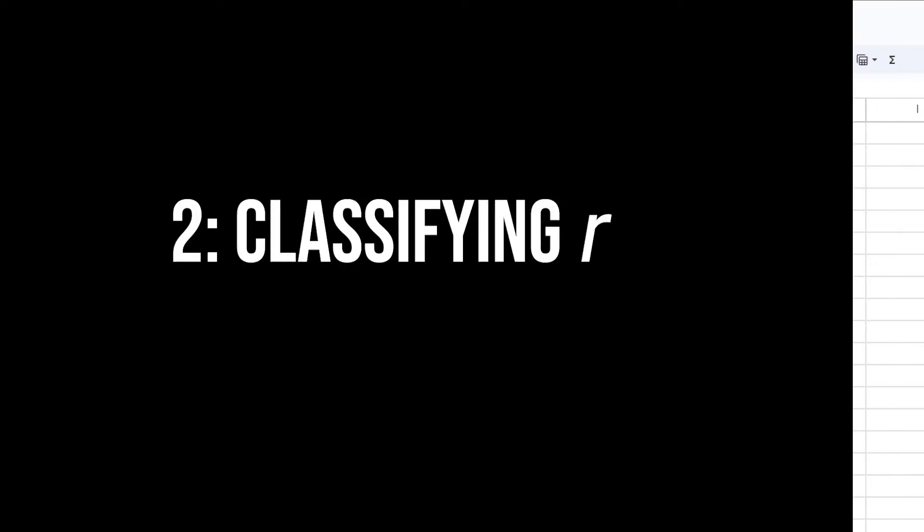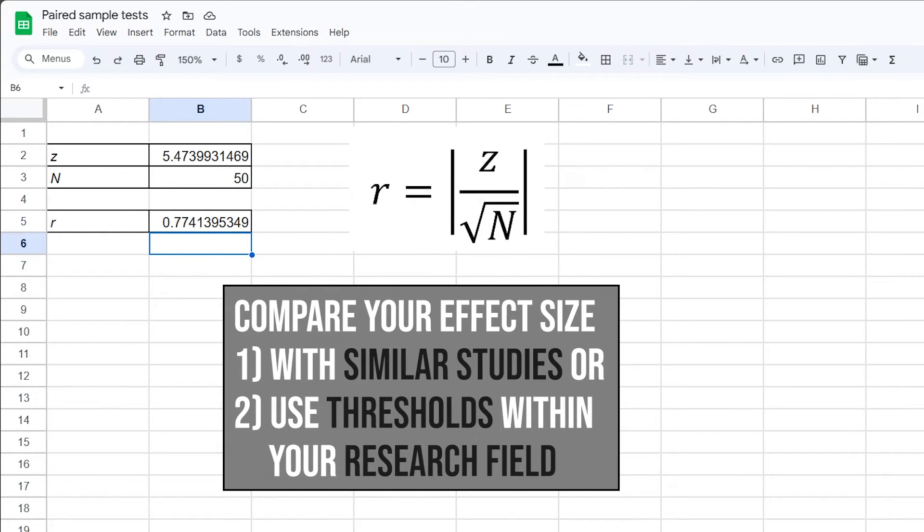Finally, you need to classify the magnitude of this effect. If similar studies in your research field exist, compare your effect size with the given one. Ideally, those studies also discuss the choice of n.